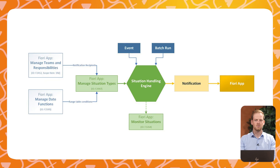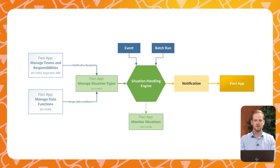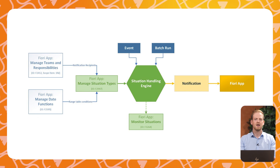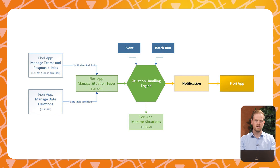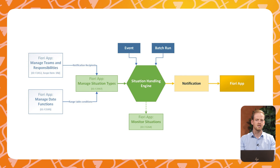Situation handling is a tool that can help make your life as an SAP user easier. It can spot situations a few times a day and send notifications when they occur. These notifications can appear in the My Situations app, in the functional app like the Manage Sales Quotation app we just saw, in the My Inbox app, and can also be sent to your email address. The system can determine the recipient of the notifications via the Teams and Responsibilities functionality, or via ABAP if you want more extensive recipient determination.